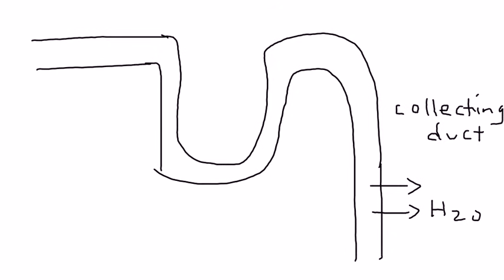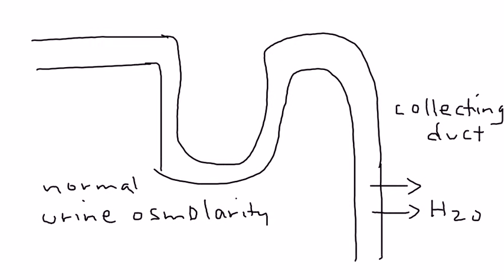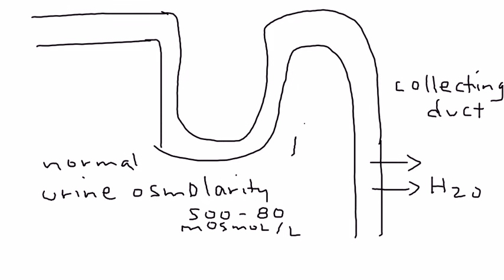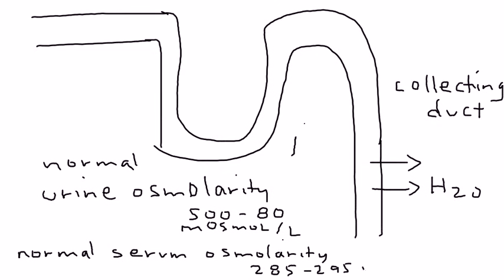The first number I'd like to give is what is the urine osmolarity normally in a normal person. The normal urine osmolarity is about 500 to 800 milliosmoles per liter. And similarly, the normal serum osmolarity is about 285 to 295 milliosmoles per liter. These numbers help us decide how dilute or how concentrated something is.